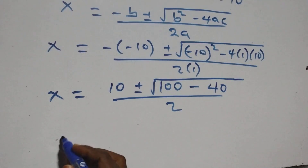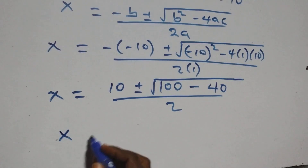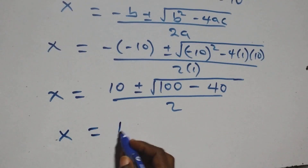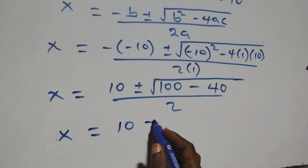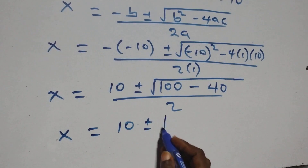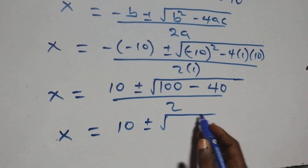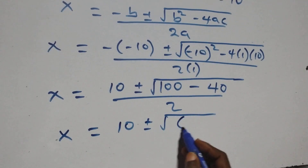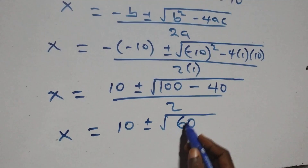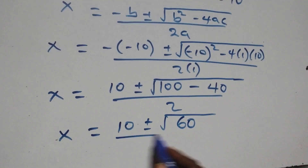After substituting the values, we have x equals to ten plus or minus square root of one hundred minus forty — that's sixty — then over two.